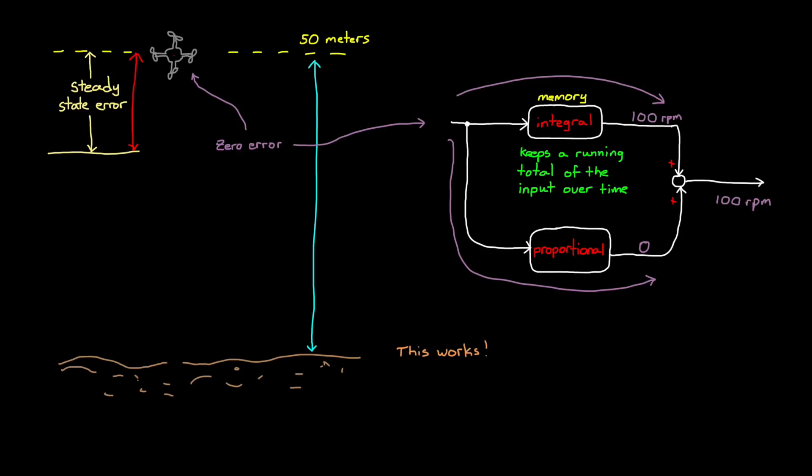Alright, this proportional integral controller is it. This is what we want, right? Something that understands the present and has memory of the past. Well, looking at the past and present error will get us to our goal in this situation. However, the path the drone takes to get there might not be ideal.